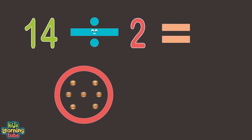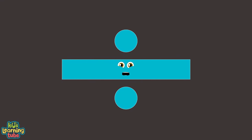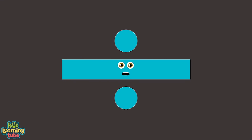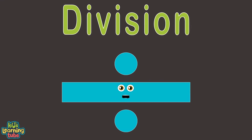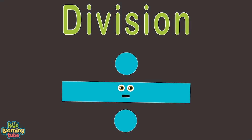Now that we've counted fourteen dots within the two circles we drew, let's count how many dots are in one circle. One, two, three, four, five, six, and seven. Seven is the answer that we're looking for in this equation. This tells me two goes into fourteen seven times. This is how you do basic division. Now pick two numbers and divide. Watch this division video over again until you can divide any number, then go show your friends.